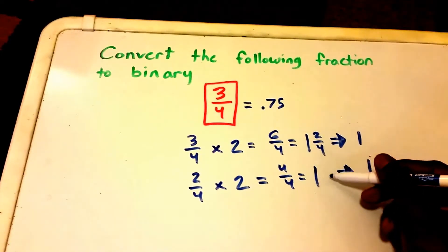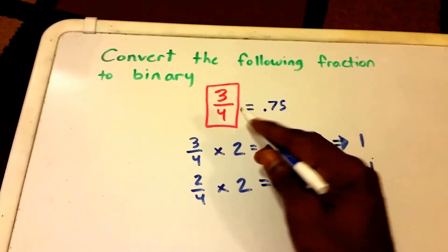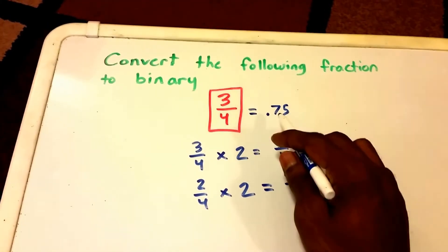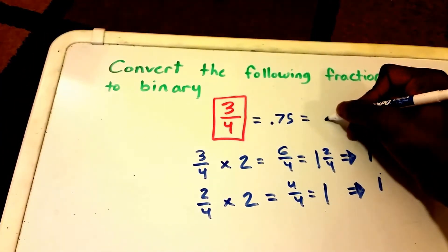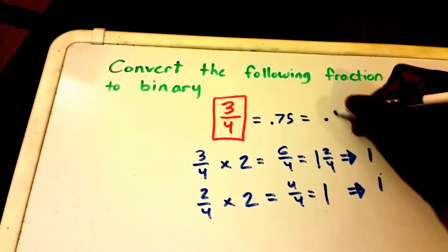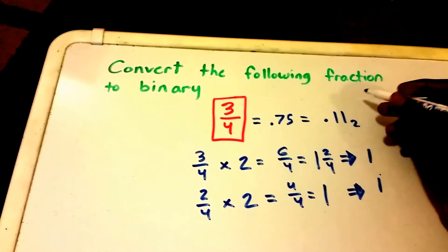And then notice that we don't have any fraction parts left to multiply so we can stop there. So this tells us that 3 fourths which is equal to 0.75 is equal to 0.11 in base 2 or in binary.